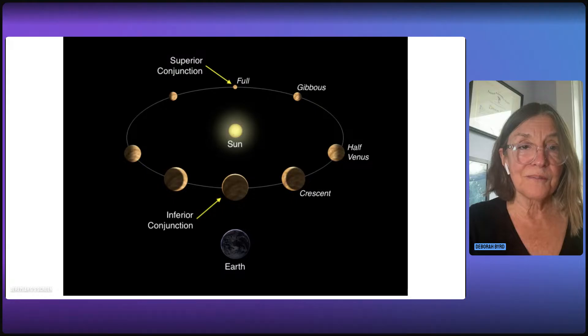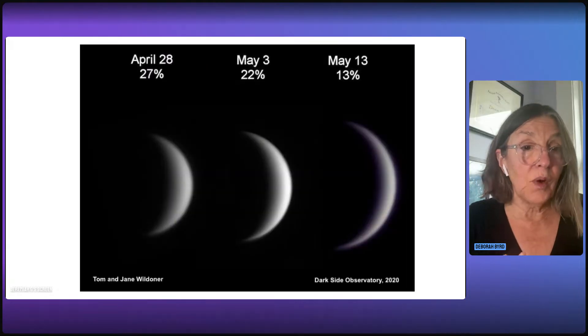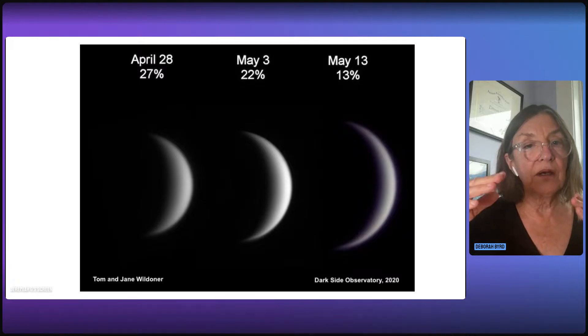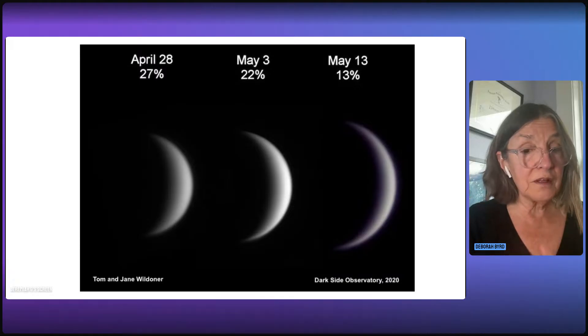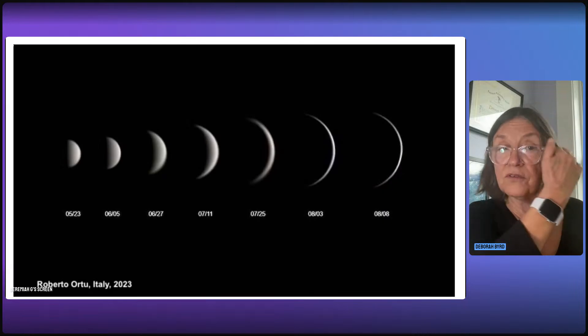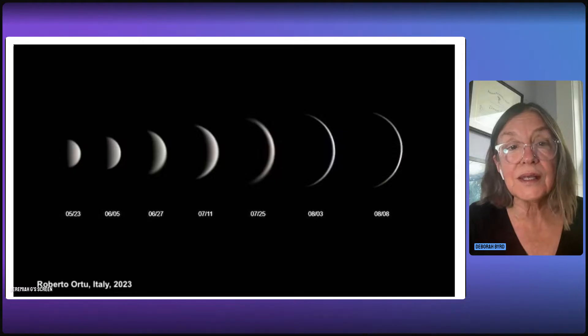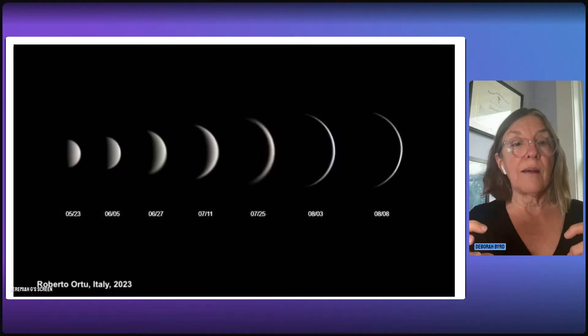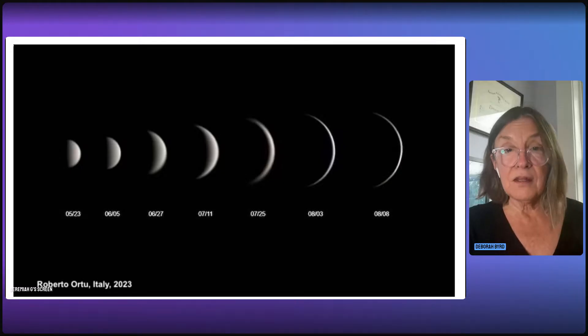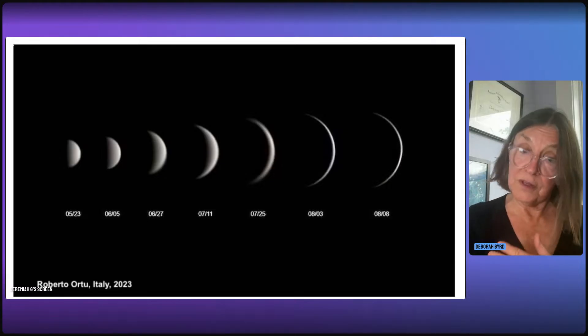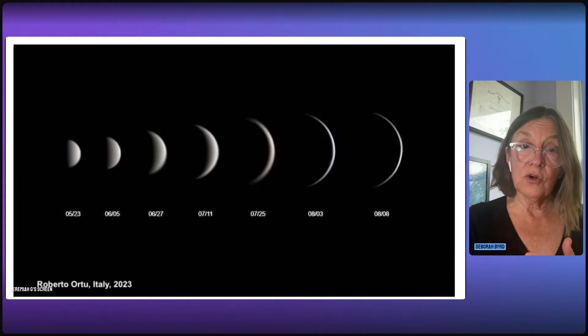So let's look at some pictures. This image is from Tom and Jane Wildener in Weatherly, Pennsylvania. It's from the year 2020, but same situation as now. Venus was becoming a thinner crescent, but a bigger crescent in our sky because it was about to go between the Earth and sun. And this one is from Roberto Ortu in Italy. He captured these images of Venus in 2023, and same deal here. He's capturing these images over time, in this case, from May to August of 2023. And all that time, Venus was racing along in orbit, coming up behind the Earth, getting ready to go between the Earth and sun, which it did that year on August 13th.